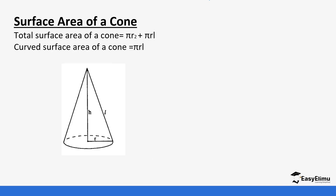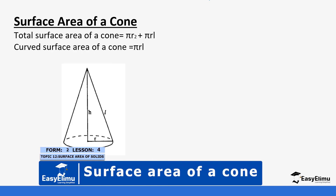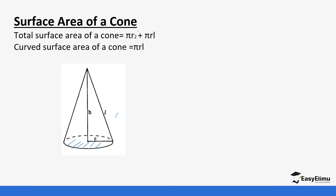For the surface area of a cone, we look at two parts: the base area, which is the area of a circle given by πr², and the curved surface area, which is πrl. When you calculate the total surface area, you add those two areas together to get your value. Let's do some examples incorporating that formula.